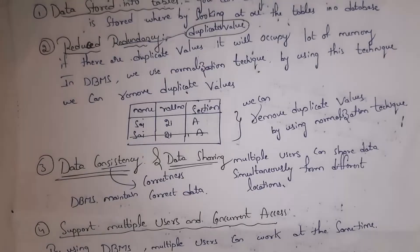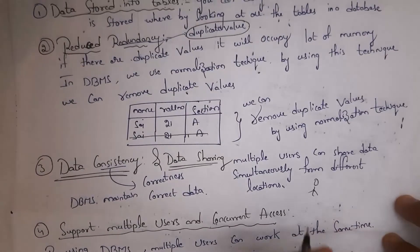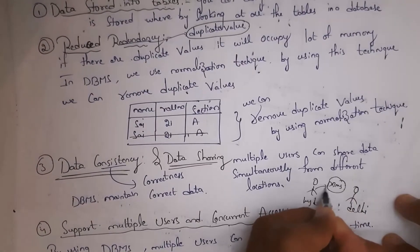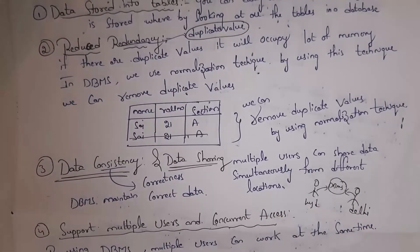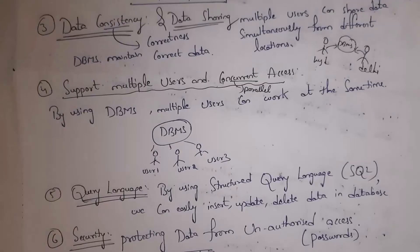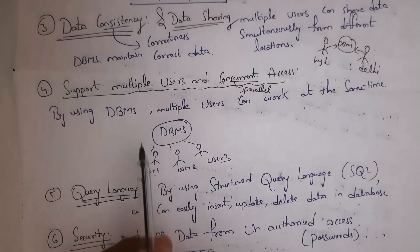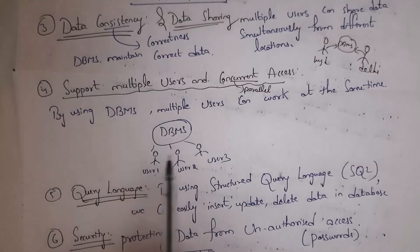Data sharing means multiple users can share data at a time from different locations. For example, one person in Hyderabad and another in Delhi can communicate using DBMS software without depending on location. The next feature is support for multiple users and concurrent access — meaning parallel access. At a time, multiple users can access the database using DBMS software.